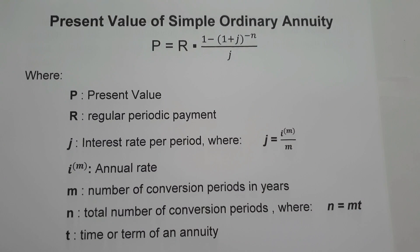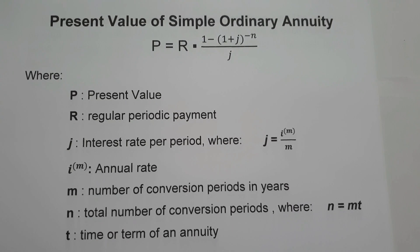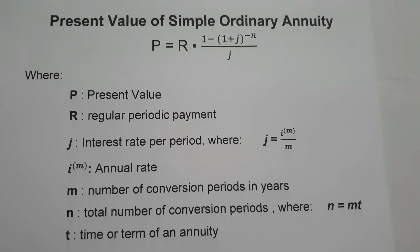In this video, we are going to talk about how to compute for the present value of the simple ordinary annuity. When we say simple ordinary annuity, it is an annuity where the payment interval is the same as the interest period, and payments are made at the end of each payment interval.